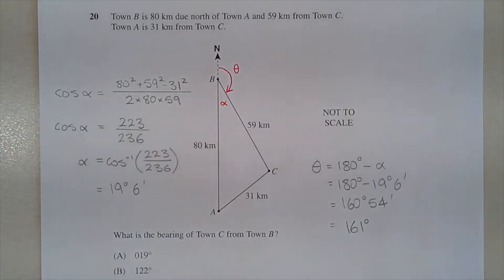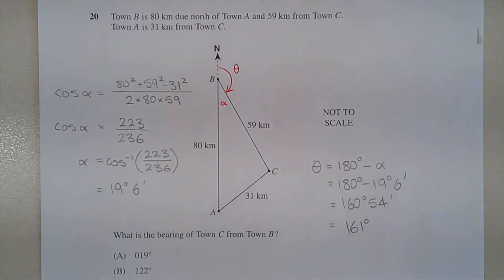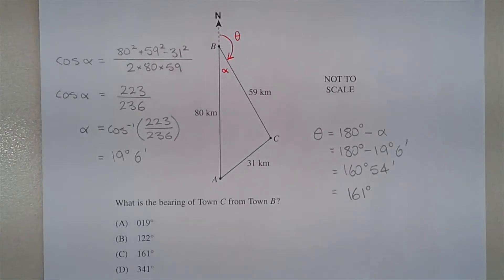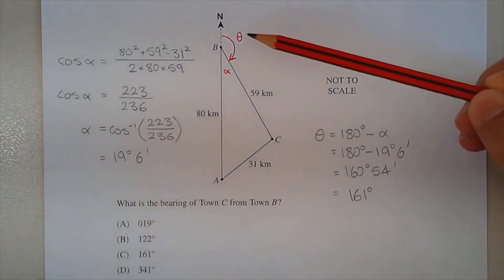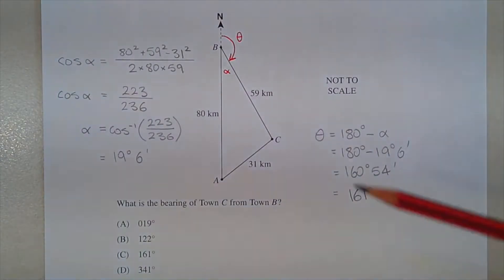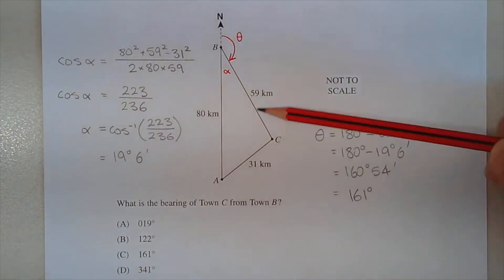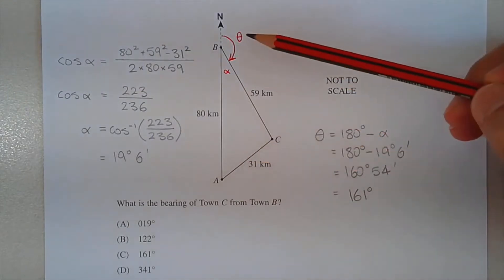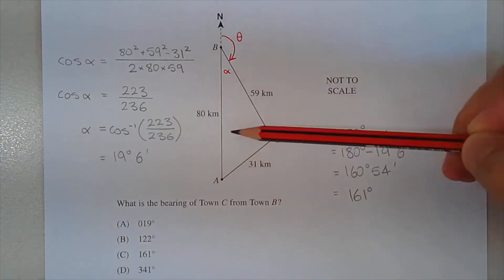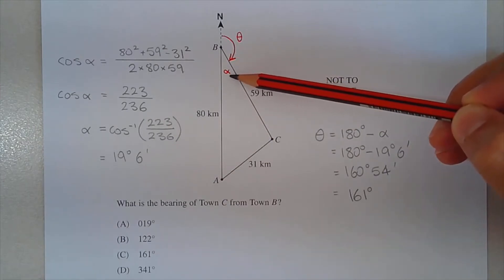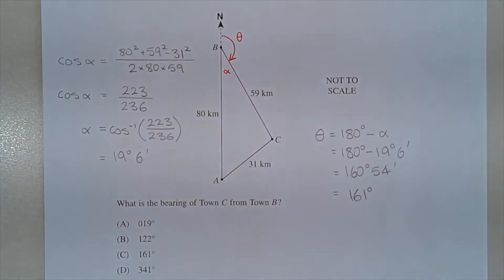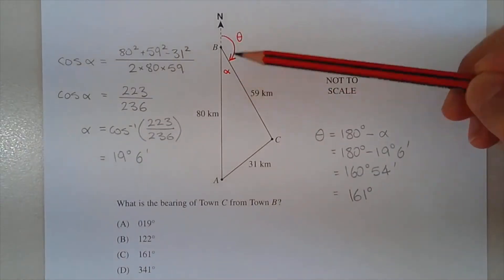Question 20: Town B is 80 km due north of town A, and 59 km from town C. Town A is 31 km from town C. What is the bearing of town C from town B? The bearing is represented by angle theta, which is outside triangle ABC. To find theta we first find angle alpha inside the triangle, since alpha plus theta equals 180 degrees — they are supplementary angles on a line.